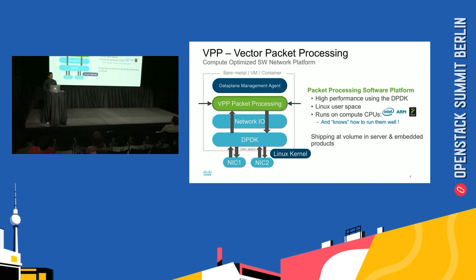VPP is able to do fast network I/O directly in user space, which means that if you want to do vSwitch upgrades, you don't really have to patch the kernel or reboot your machine. Much like any user application, you are able to upgrade your vSwitch directly. So that is an overview of vector packet processing.